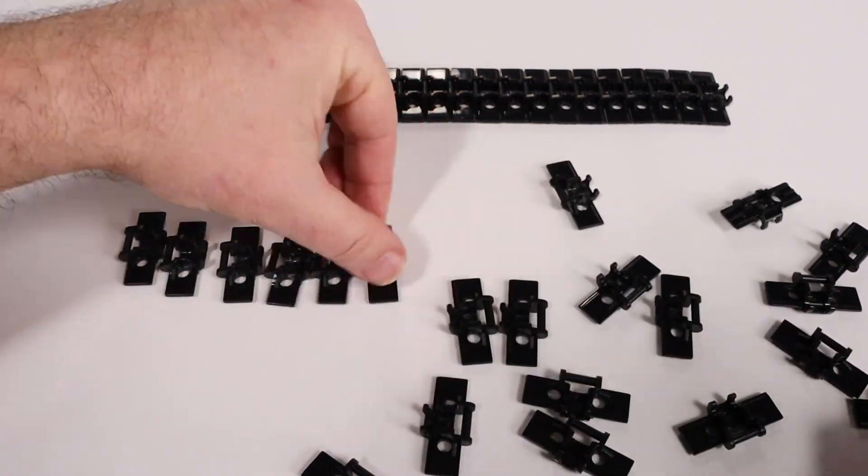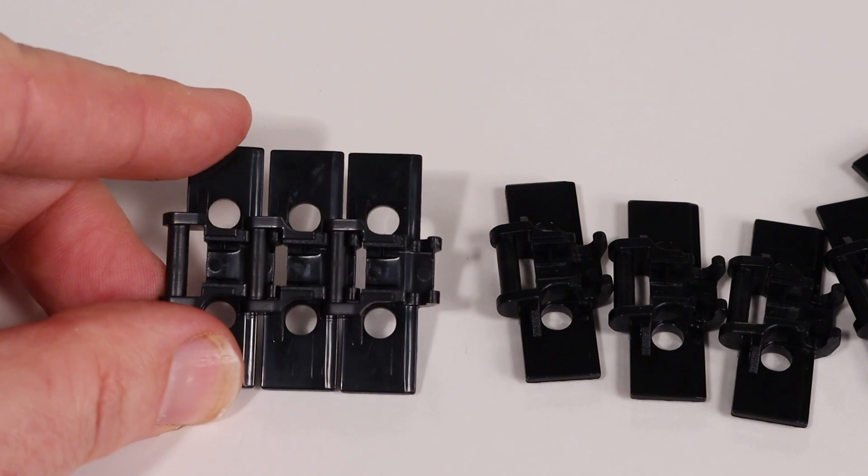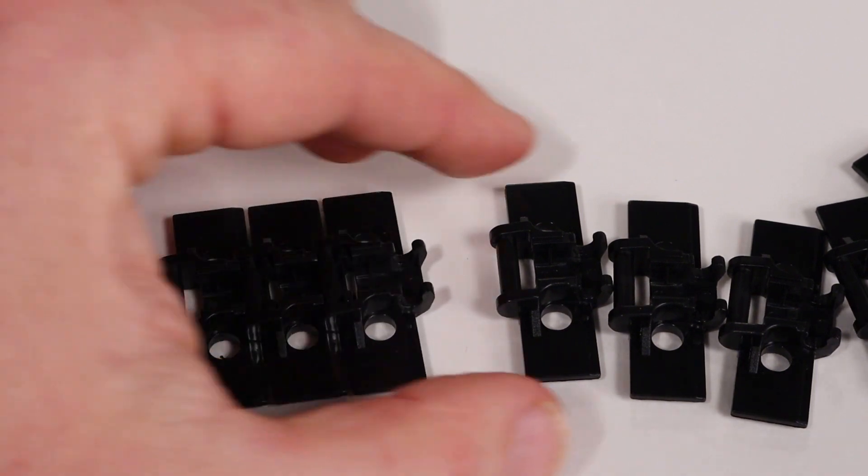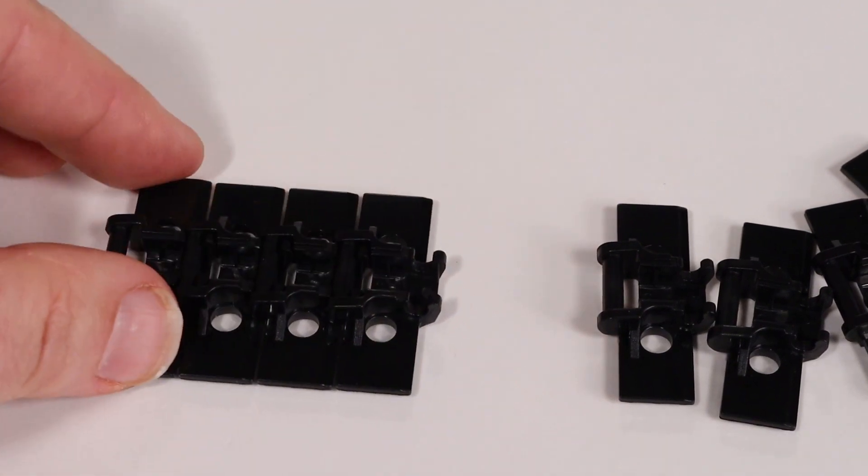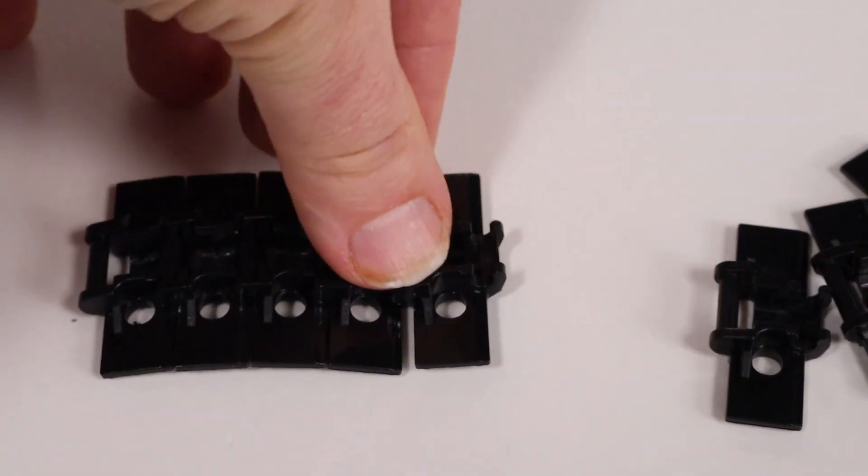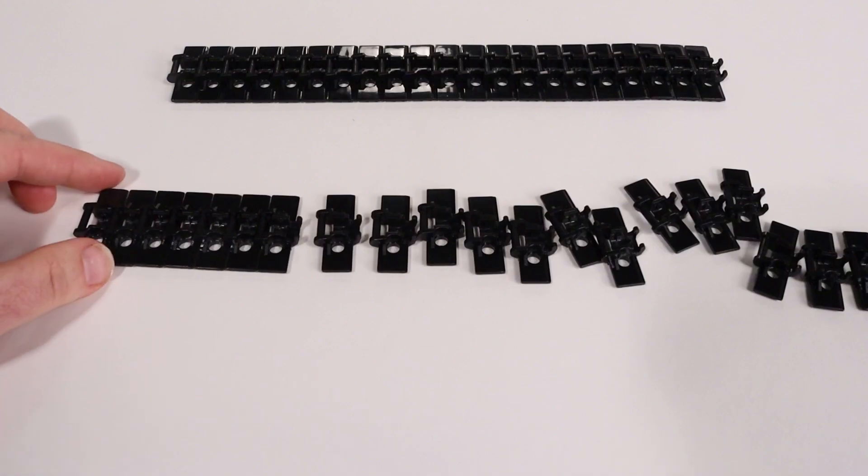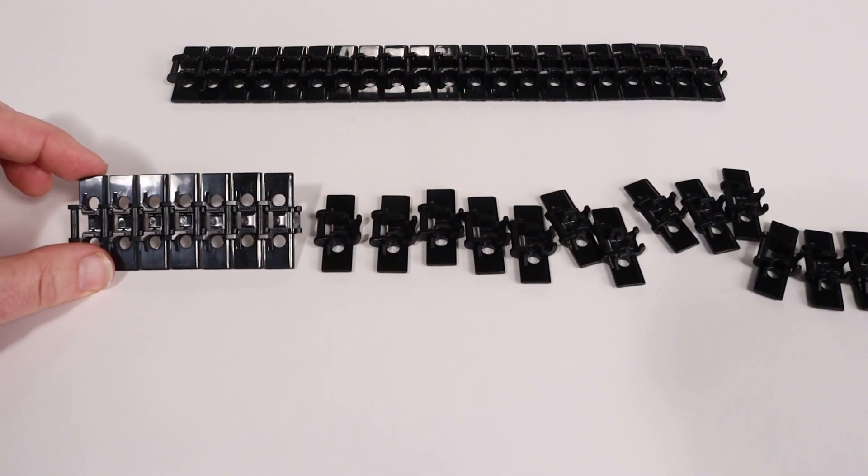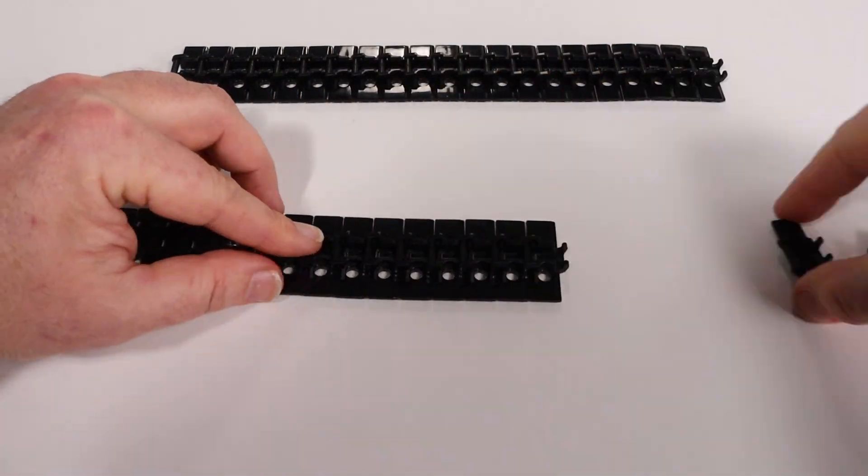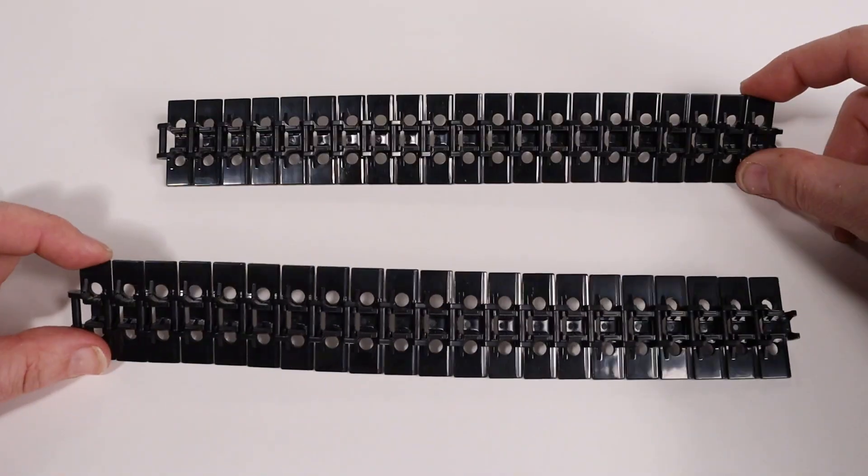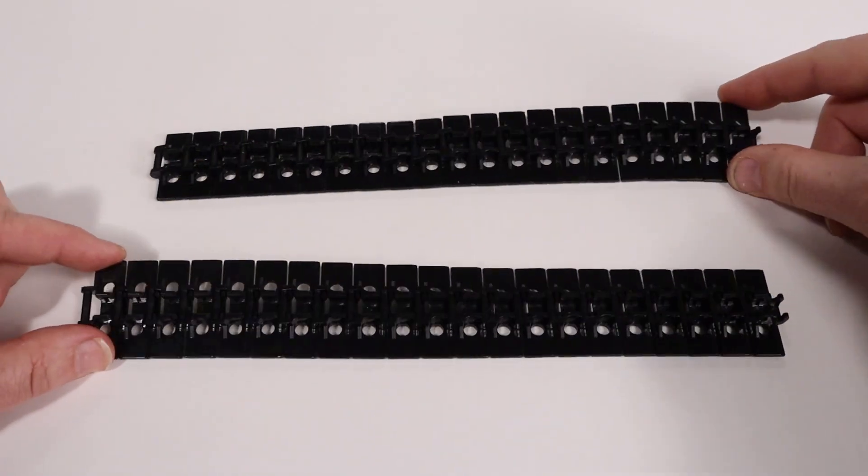After that, start lining up the parts, all facing the same direction. Each individual piece connects one to the next to the next. Overlap two parts and snap into place. Then just repeat this until the entire track is assembled. When you're all done, you'll have two completed tank tracks that look just like this.